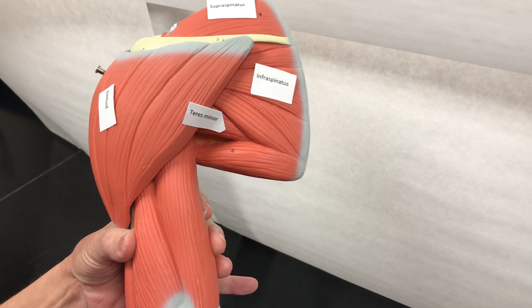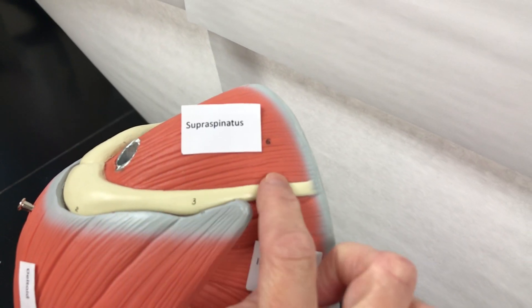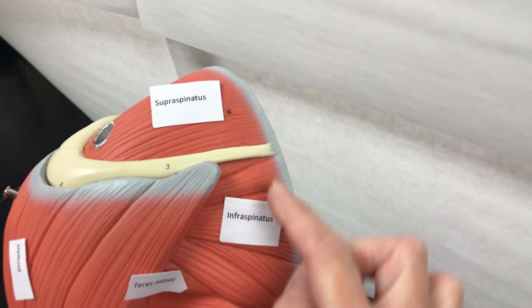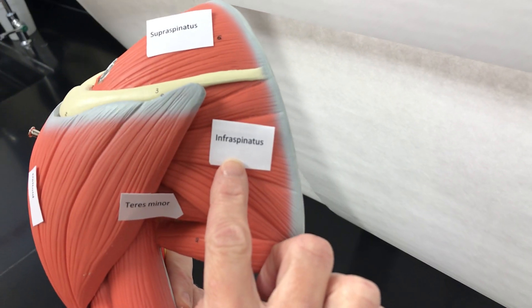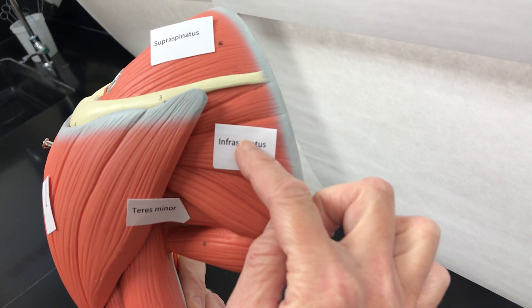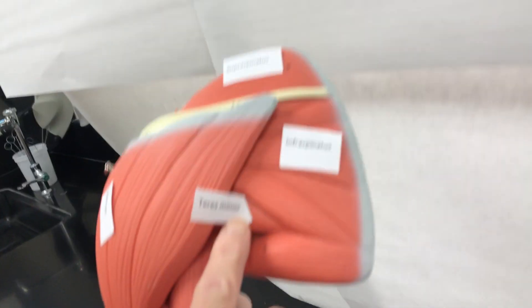Then we have the muscles of the rotator cuff. We have the supraspinatus - this is the spine of the scapula, so it's above the spine. We have the infraspinatus, which means it's below the spine of the scapula. We have the teres minor,